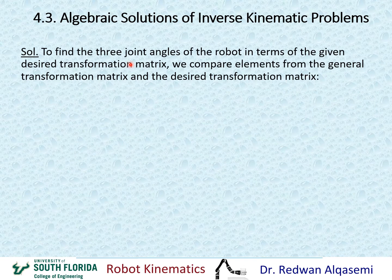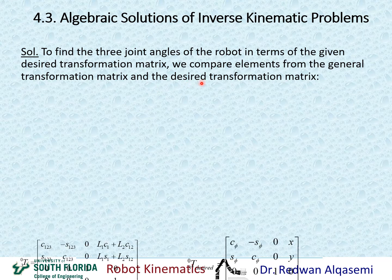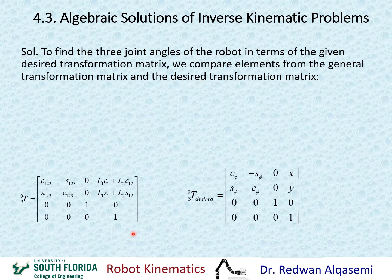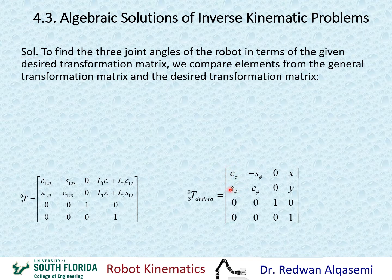Looking at the solution, the first thing is to compare the transformation matrices — the desired transformation and the general transformation obtained through forward kinematics. I placed these two transformations here temporarily so I can do the comparison, extract equations from them, and then remove them from the slide.